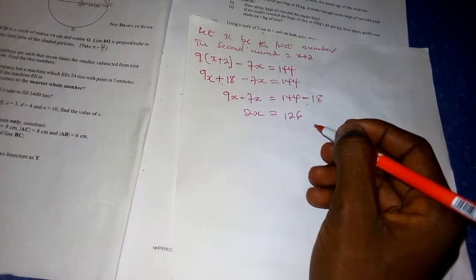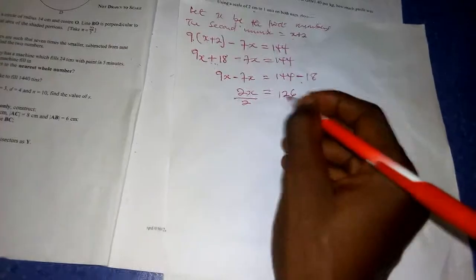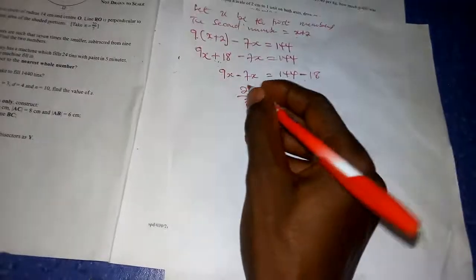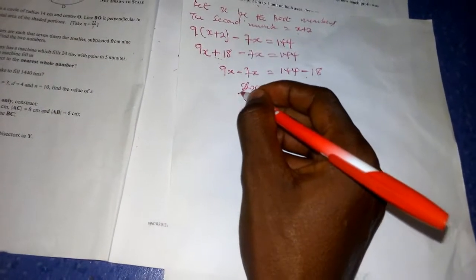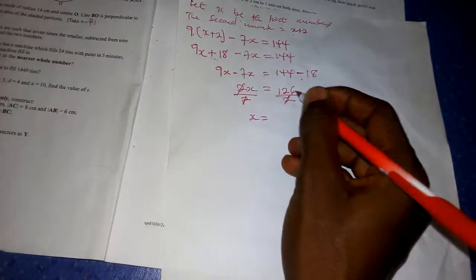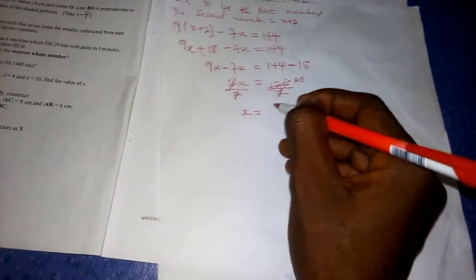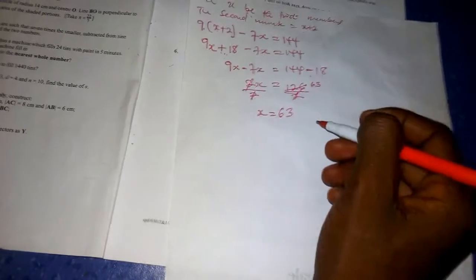Divide both sides by 2 to get rid of this 2. This will cancel, making X equal to... two goes into 126 sixty-three times, so 63. Now you have the first odd number which is X to be 63.